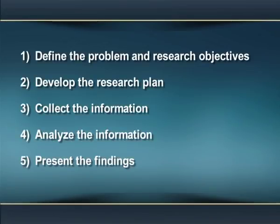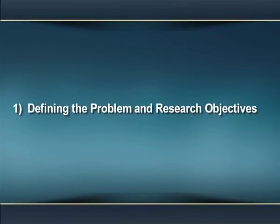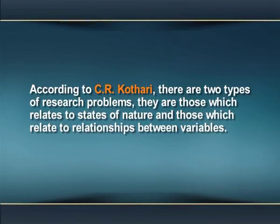The marketing research process: according to Philip Kotler, effective marketing research involves five steps. They are: first, define the problem and research objectives; second, develop the research plan; third, collect the information; fourth, analyze the information; and fifth, present the findings. The first step is defining the problem and research objectives. According to C.R. Kothari, there are two types of research problems — those which relate to states of nature, and those which relate to relationships between variables. A well-defined problem is half solved, so the researcher must find out the problem they want to study.